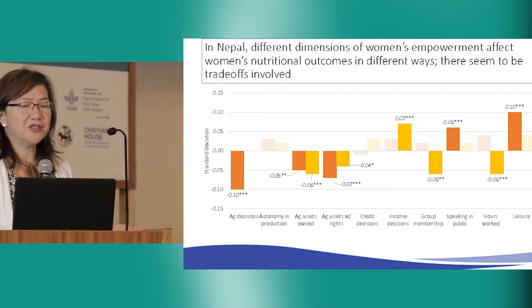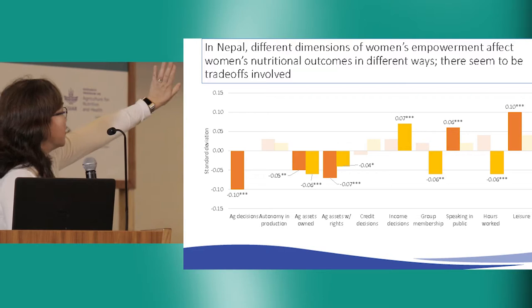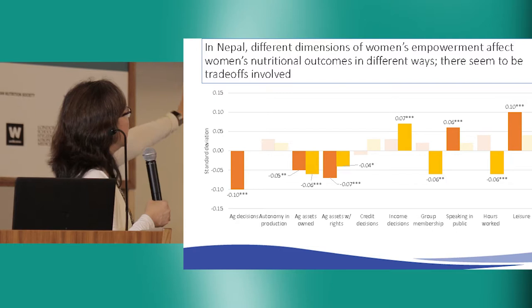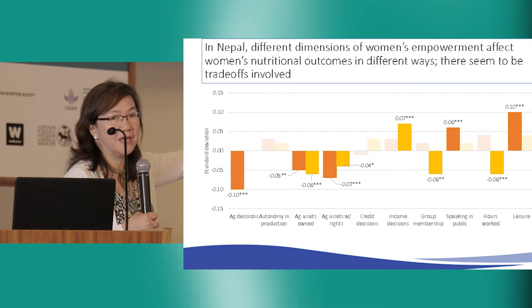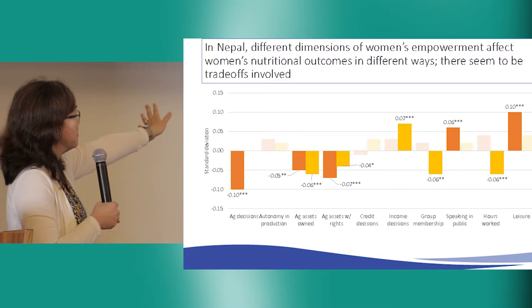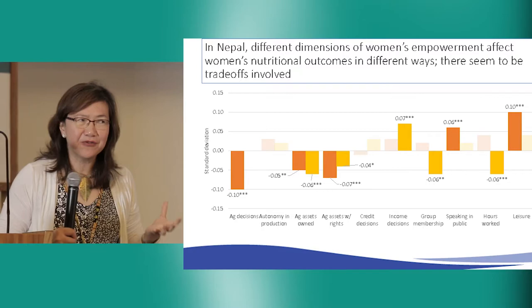We see that different dimensions of women's empowerment affect women's nutritional outcomes in different ways, and there seem to be trade-offs involved. The blocks on the left — related to direct participation in agriculture, agricultural decisions, and agricultural assets — seem to have negative associations with women's dietary diversity and BMI. Income decision-making has positive associations, and satisfaction with leisure and ability to speak in public also work well for her. This makes you think that women's heavy participation in agriculture may not necessarily be good for her nutrition.